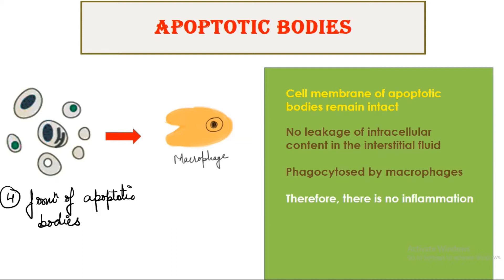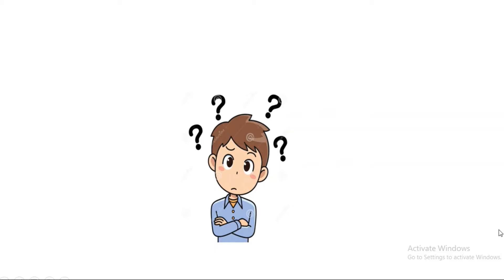The first point is that the cell membrane of the apoptotic body remains intact — meaning there is no damage to the cell membrane. As the membrane is intact, there will be no leakage of intracellular content into the interstitial fluid. These apoptotic bodies are effectively engulfed by macrophages by the process of endocytosis, so there will be no inflammation in apoptosis. In necrosis, the opposite occurs: the cell bursts, there is leakage of intracellular contents, and this triggers the inflammatory process.